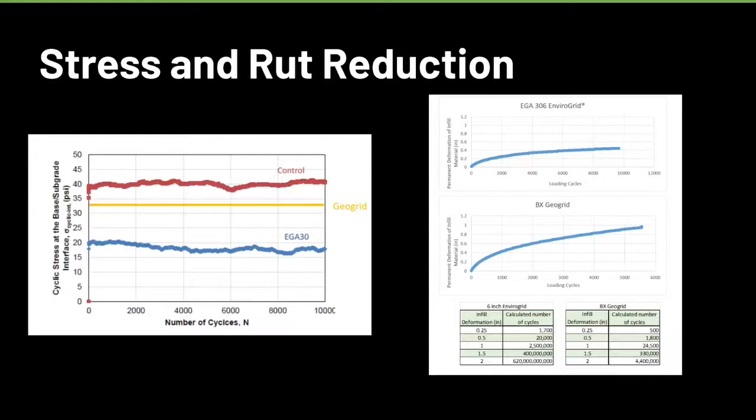There's a huge difference in the stress that is placed on the subgrade when using a GeoCell versus a Bioxio or two-dimensional product. The rutting is very much reduced as well because two-dimensional products really aren't able to control lateral spreading very well. Whereas, GeoCell can.